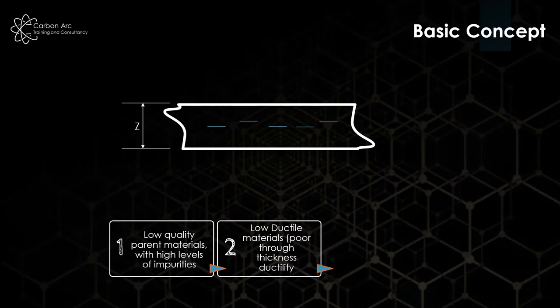Those laminations within the through thickness of our steel work to drop the ductility, the through thickness ductility. So that's in our z direction, through thickness.